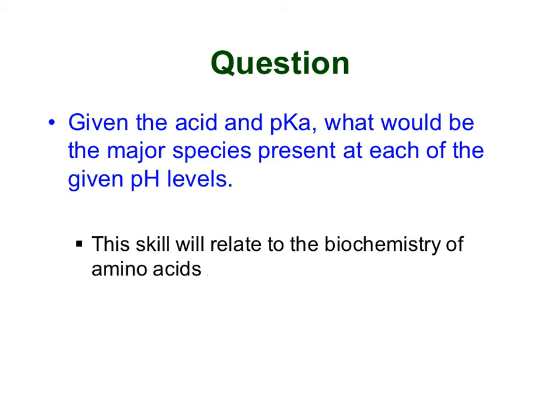The most common question you'll see over this material will also be the most practical. It's given the acid and the pKa, what would be the major species present at each of the given pH levels. Remember, major species just means what form is it in, what molecule is it. This skill will directly relate to the biochemistry of amino acids. So if you're interested in amino acids in metabolism, or if you're interested in that for body and biological systems, that's going to be really important. Because one of the things you do with the amino acids is figure out this thing called the P-I, and then that tells you what it looks like in different pH conditions.